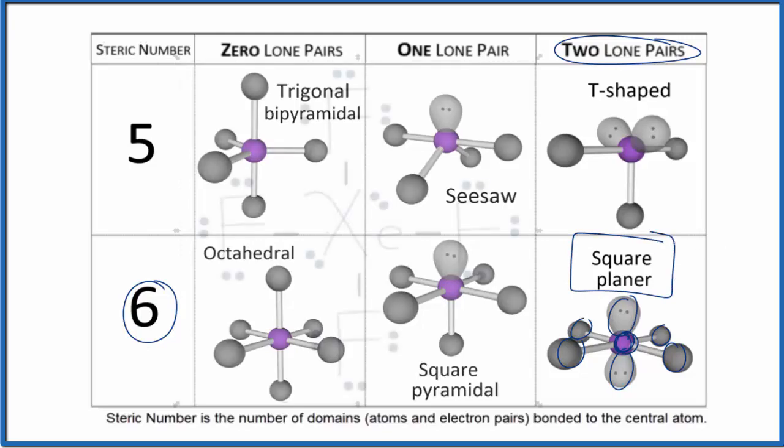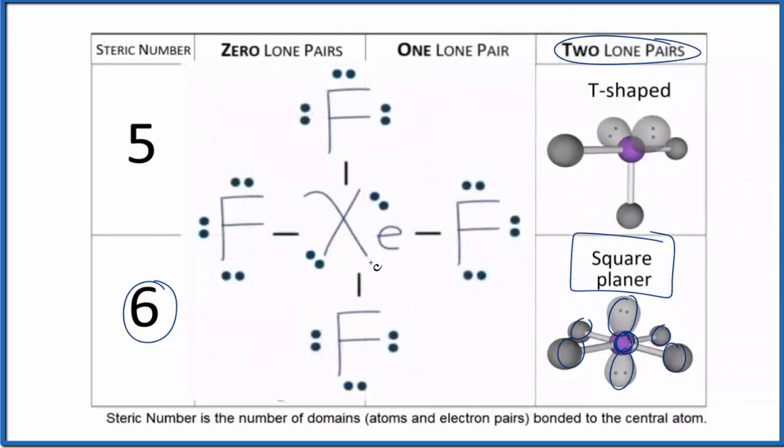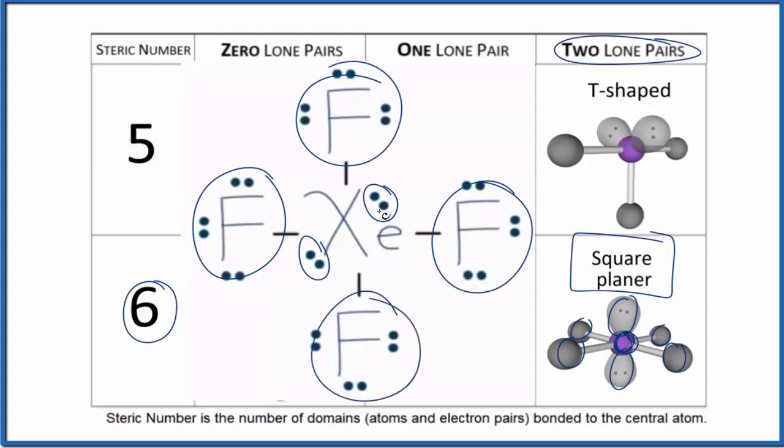A good example of that is XEF4. You can see we have one, two lone pairs, and then one, two, three, four of the atoms bonded to the central atom here, the central xenon atom, and that's a square planar molecular geometry.